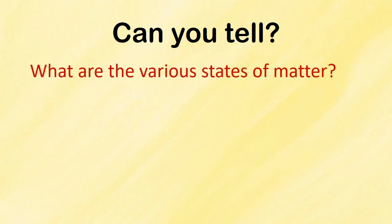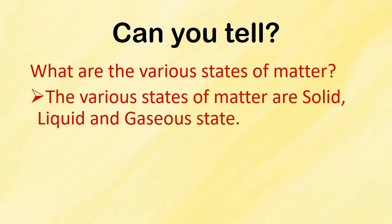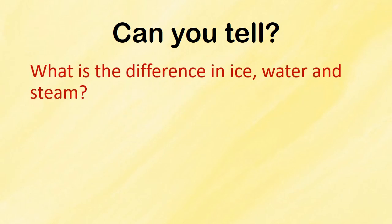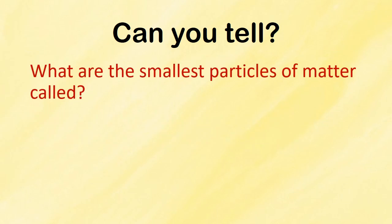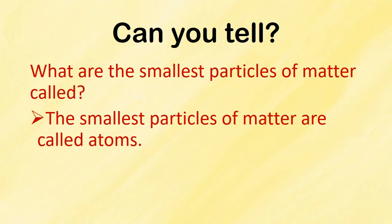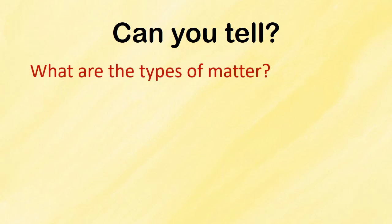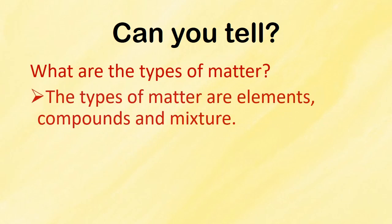What are the various states of matter? We have already learnt this in the previous standards. The various states of matter are solid, liquid and gaseous state. What is the difference in ice, water and steam? Ice, water and steam are in different states, i.e., solid, liquid and gaseous. What are the smallest particles of matter called? The smallest particles of matter are called atoms. What are the types of matter? The types of matter are elements, compounds and mixture.